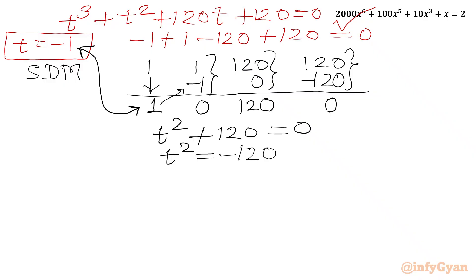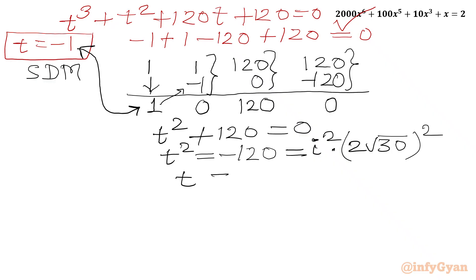Since t² equals a negative number, we get complex solutions. Writing −120 as i² times 4 × 30, which is (2i√30)², taking square roots gives t equal to plus or minus 2i√30. So from this quadratic, we obtain only complex solutions.